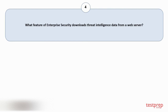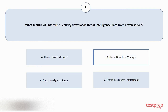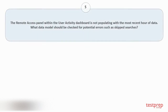Question number four: what feature of Enterprise Security downloads threat intelligence data from a web server? Options are: A) Threat Service Manager, B) Threat Download Manager, C) Threat Intelligence Parser, D) Threat Intelligence Enforcement. The correct answer is option B.